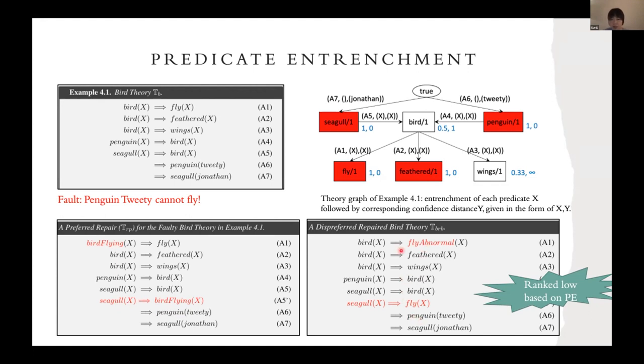The red one is not a good repair because it decides that penguin can fly abnormally or it replaces fly into fly abnormal and fly normally. But according to common sense, that is not really what we want to see. We don't say penguin can abnormally fly, it just cannot fly.